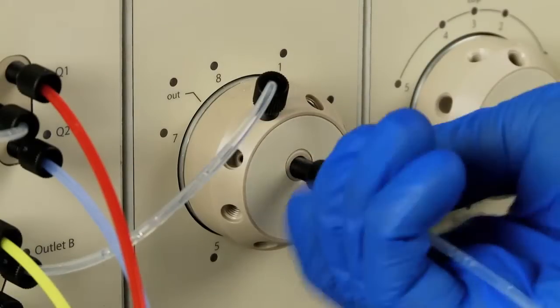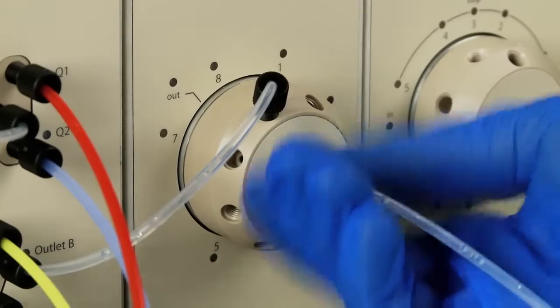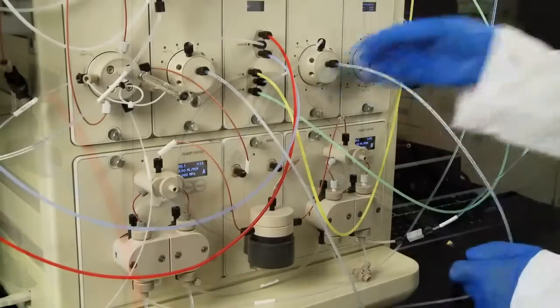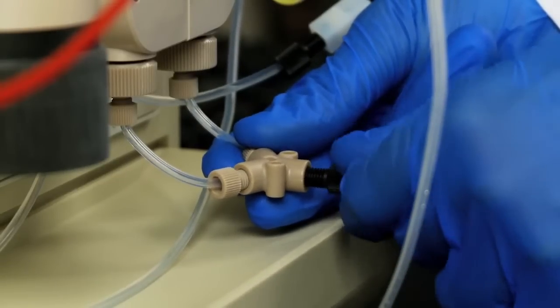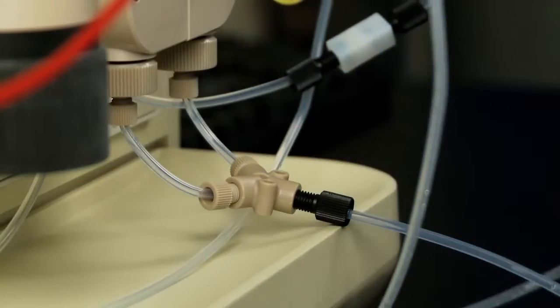Attach line number 6 to the outlet port of buffer inlet valve B, and then attach the other end to the inlet manifold for pump B. Securely tighten the fittings to ensure a proper seal and prevent buffer leaks.